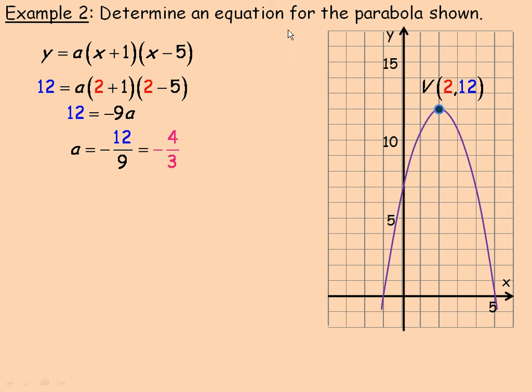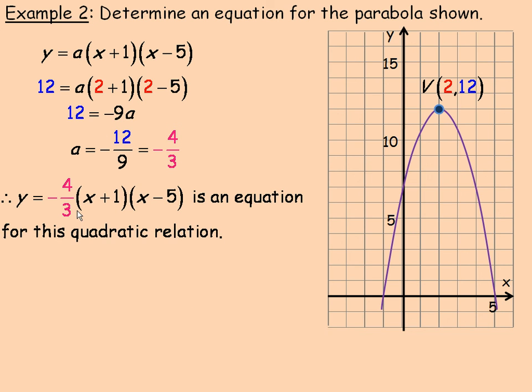And so replacing the a here with negative 4 thirds, our equation is y equals negative 4 thirds, x plus 1 times x minus 5. That's the equation for this quadratic relation. And that's the end of the lesson.